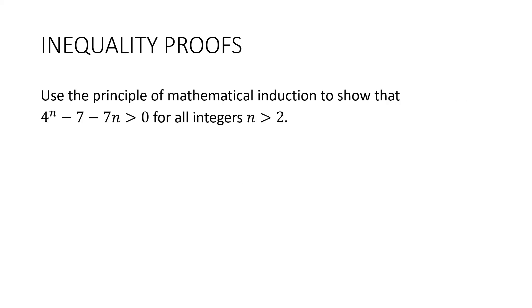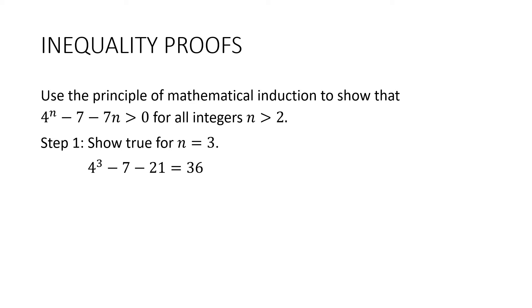Use the principle of mathematical induction to show that 4 to the n take 7 take 7n is greater than zero for all integers n greater than two. Step one: show true for n equals three — note it says n greater than two, not greater than or equal to two, so the initial value is n equals three. Substituting three in: 4 cubed take 7 take 21 equals 36, which is greater than zero. Therefore it's true for n equals three.